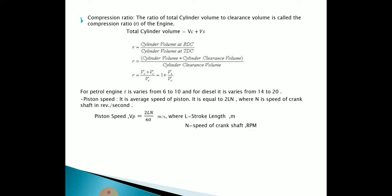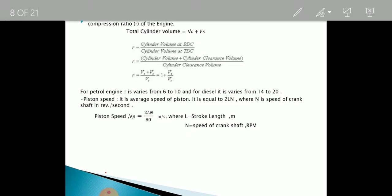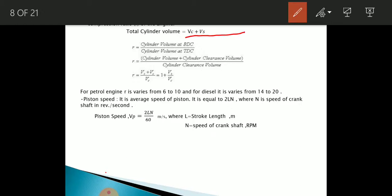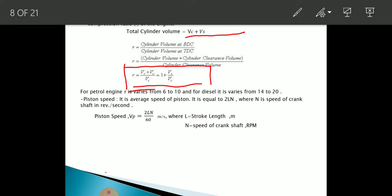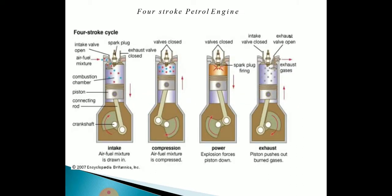Compression ratio is the ratio of total cylinder volume to clearance volume. Total cylinder volume is the sum of swept volume and clearance volume. So compression ratio r = (Vs + Vc) / Vc. For a petrol engine, the value of r ranges between 6 to 10, and for a diesel engine, the value is higher, around 14 to 20.